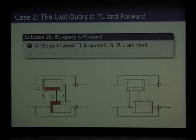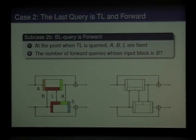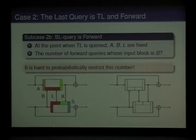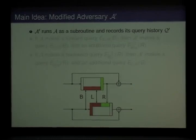Now we look at the second sub-case, where the BL query is obtained by a forward query. At the point when the last query is made, A, B, and R are fixed, because the TL query is a forward query. Now we want to upper-bound the number of forward queries whose input block is B. But in this case, it is hard to probabilistically restrict this number, because B is the input block and the adversary is able to take control over the input block. So actually we want to eliminate this case, and we can eliminate this case by slightly modifying our adversary — and this is our main idea.